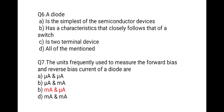The next question: a diode — option one: is the simplest of the semiconductor devices; option two: has characteristics that closely follow that of a switch; option three: is a two-terminal device; option four: all of the mentioned. The correct option is all of the mentioned. A diode is a semiconductor device. It also acts as a switch — when connected in forward bias, the switch is on; when connected in reverse bias, the switch is off. And a diode has two terminals: anode and cathode.